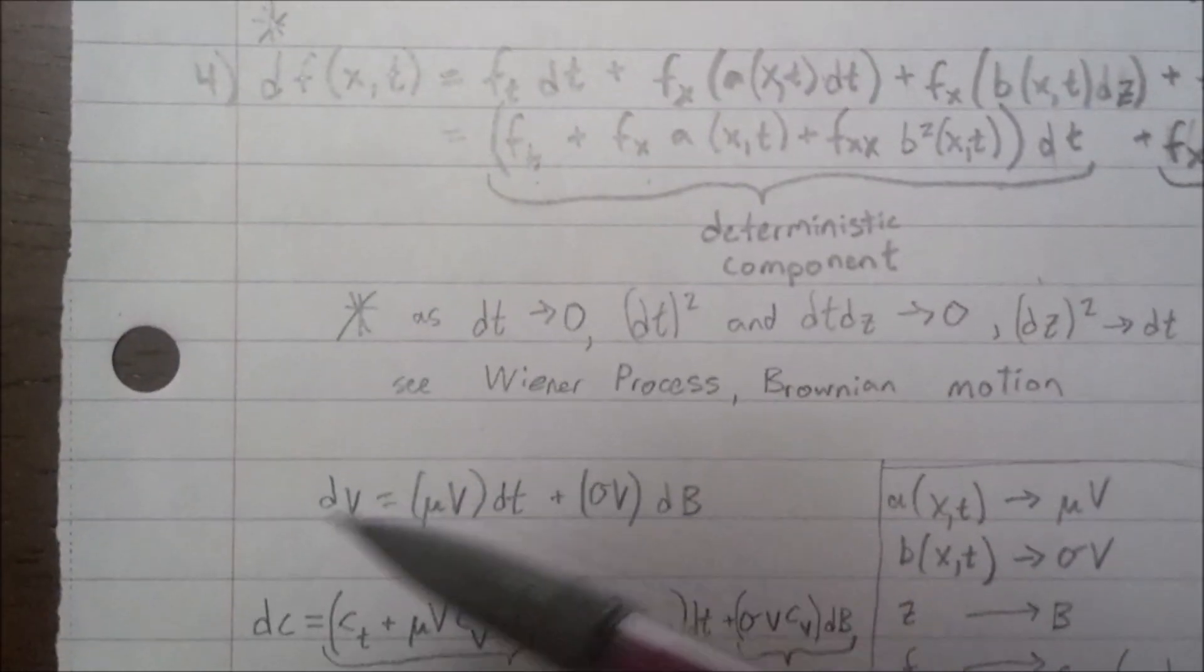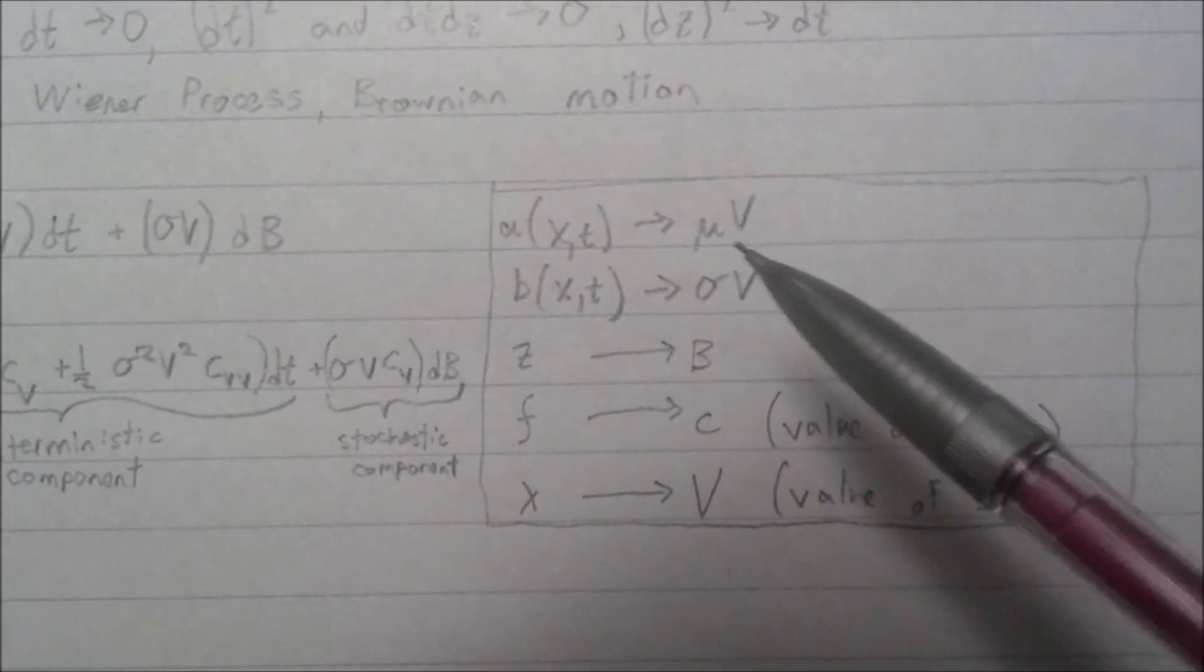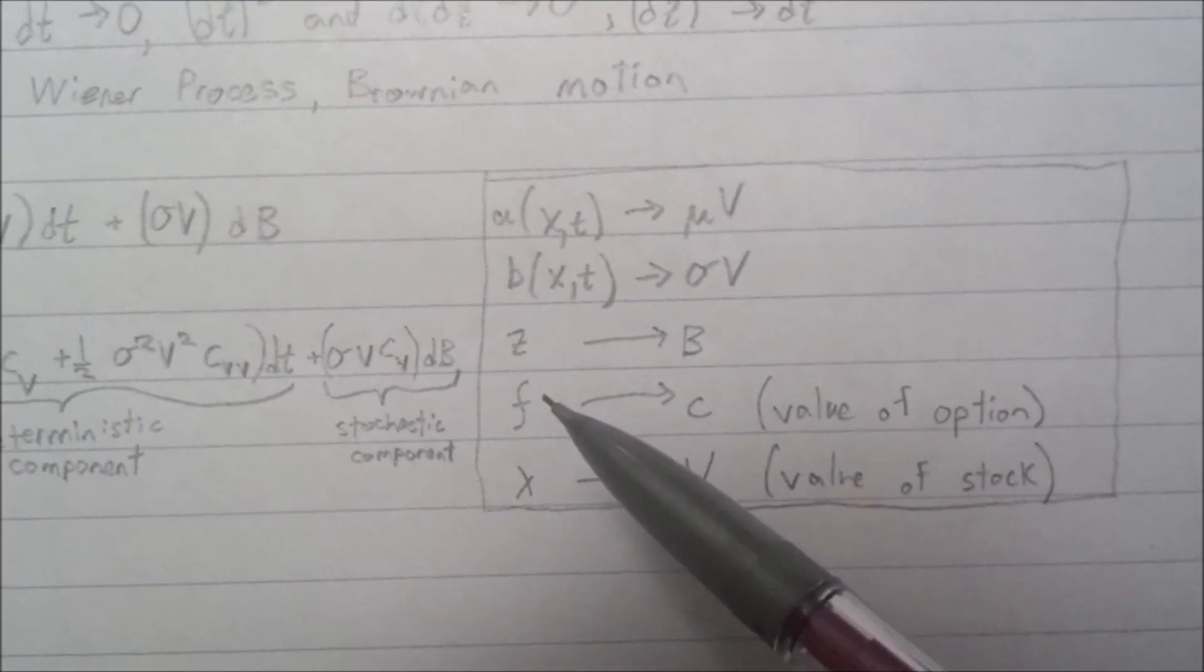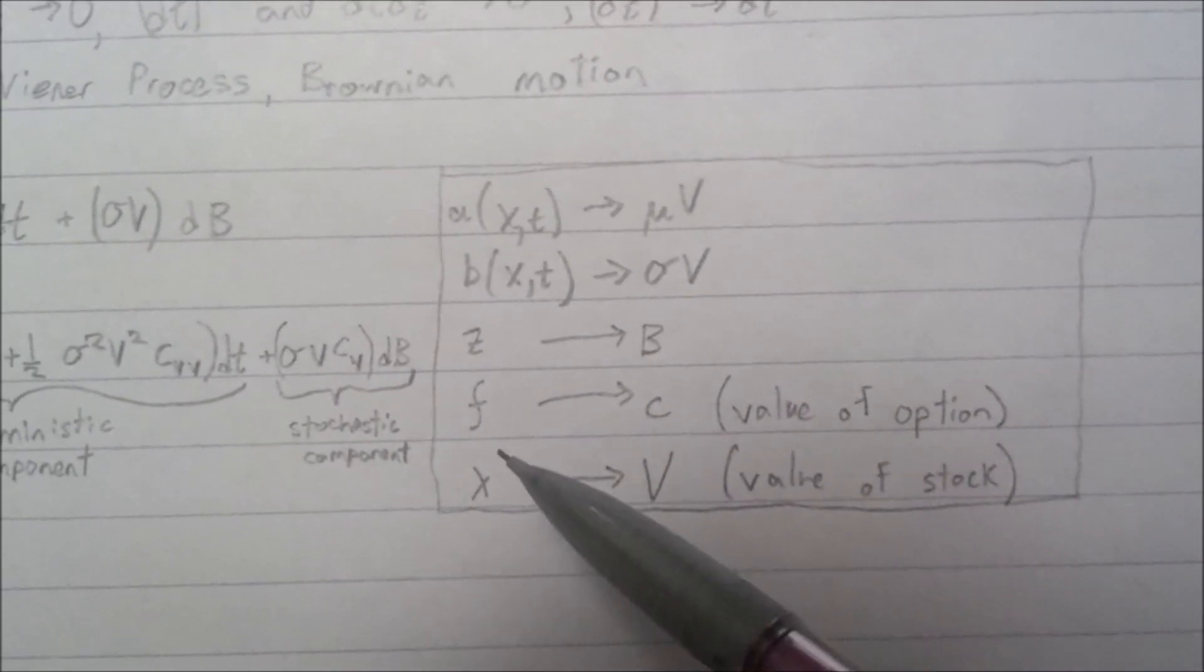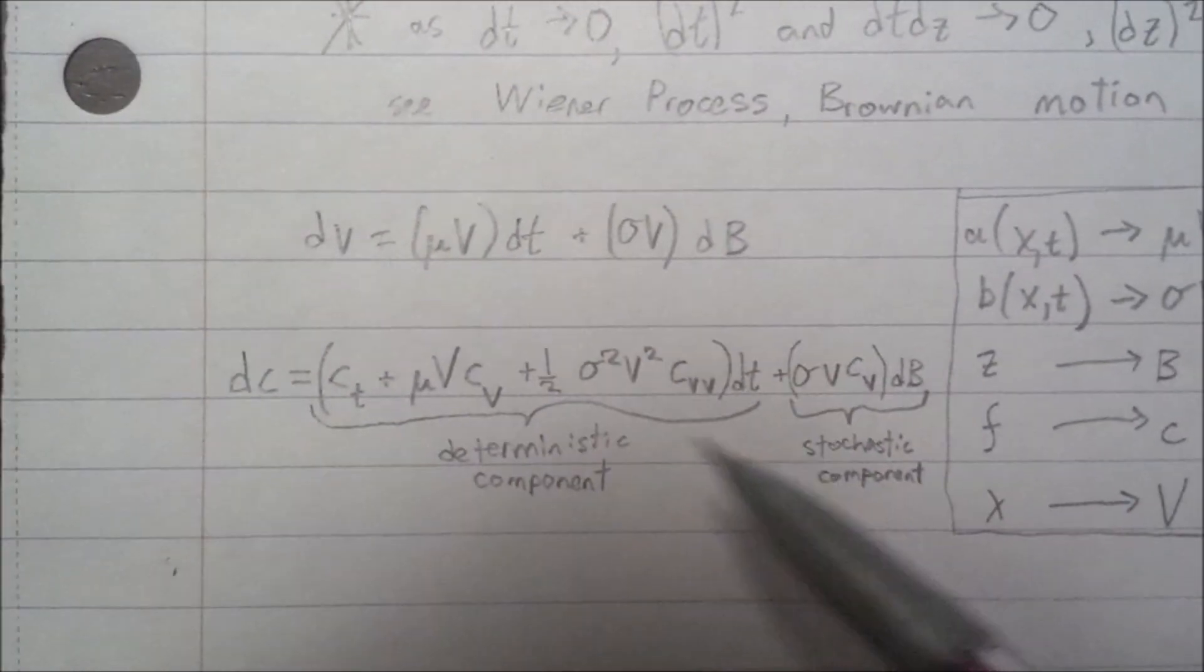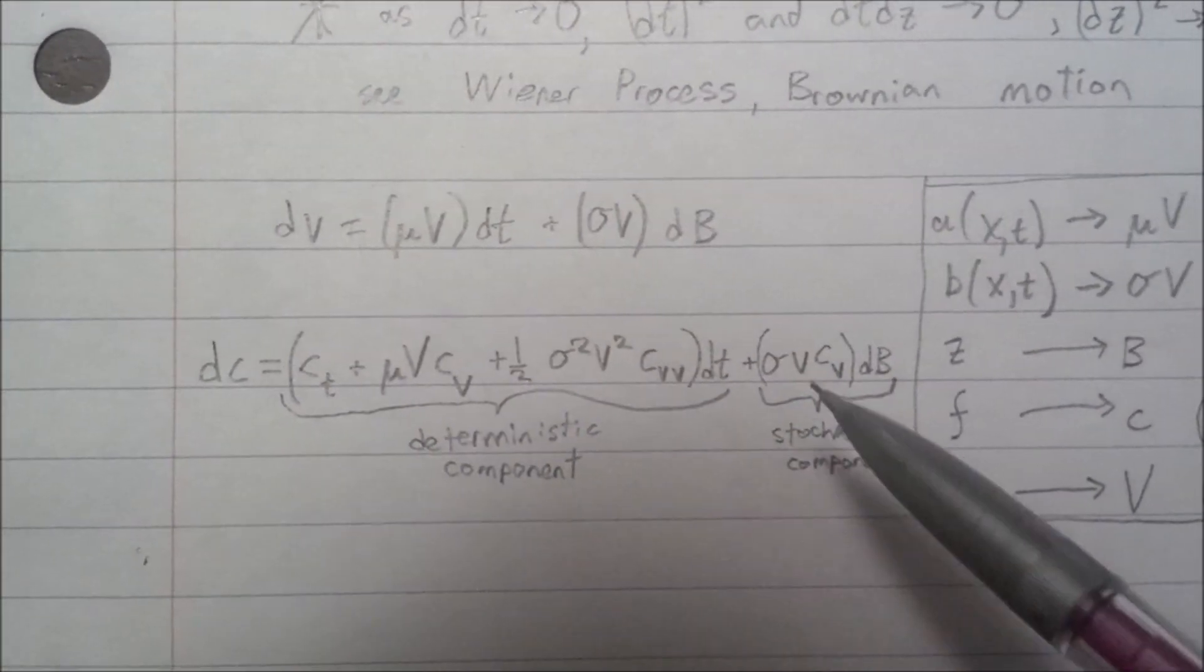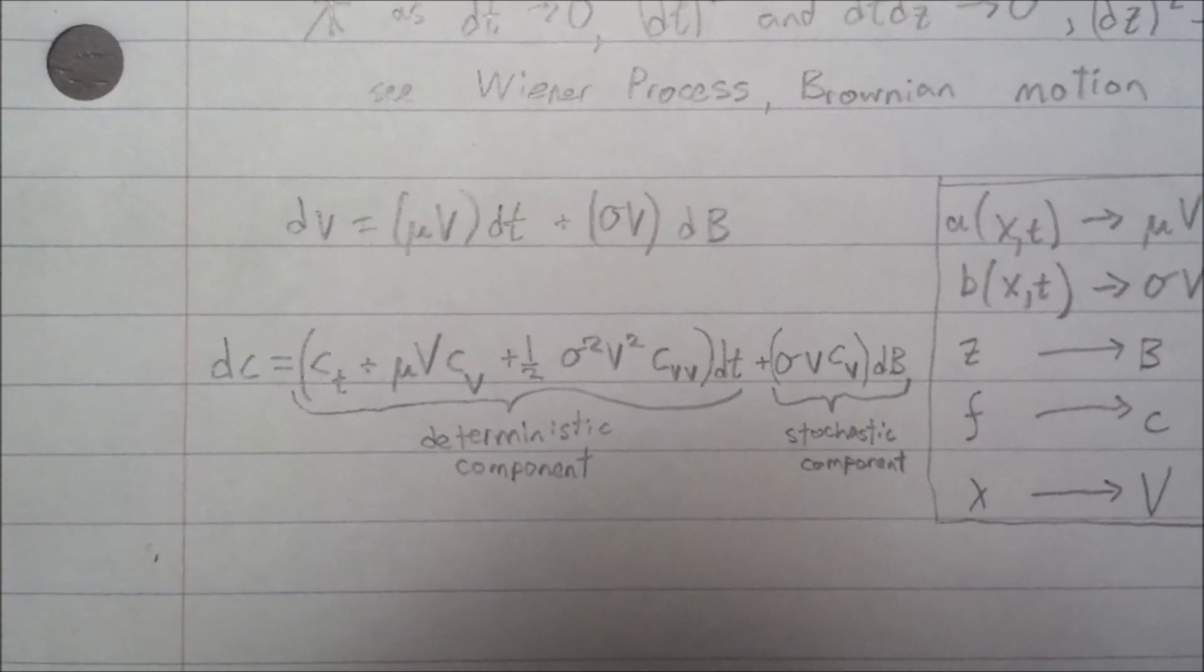So we can see down here, we have a similar form to this. So we're going to make these substitutions, random variable for random variable, and f for c, where c is the value of an option, and x for v. And we get this formula right here, which is what we will use to solve the Black-Scholes equation, or to derive the Black-Scholes equation.